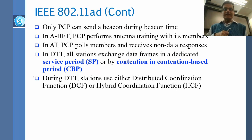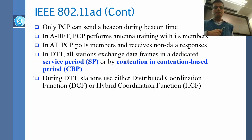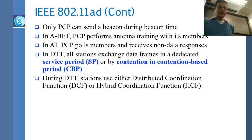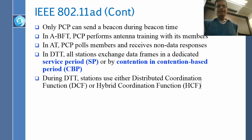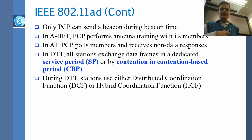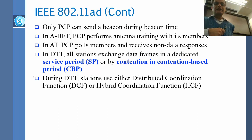During announcement time (AT), the PCP polls members and receives non-data responses. The PCP can ask each member: do you have something to say? A member might respond that it wants to send something to another station and needs, say, five milliseconds. So the PCP polls everyone to figure out their requirements. During data transfer time (DTT), all stations exchange data frames either in a dedicated service period or by contention in a contention-based service period.